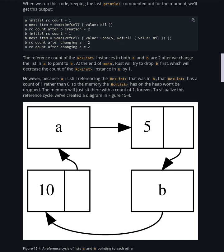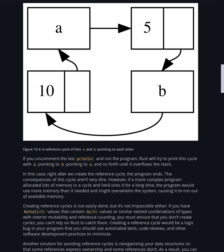To visualize this reference cycle, we've created a diagram in Figure 15-4, showing a reference cycle of lists A and B pointing to each other. If you uncomment the last print line and run the program, Rust will try to print this cycle with A pointing to B pointing to A and so forth until it overflows the stack. If a more complex program allocated lots of memory in a cycle and held onto it for a long time, the program would use more memory than it needed and might overwhelm the system, causing it to run out of available memory.